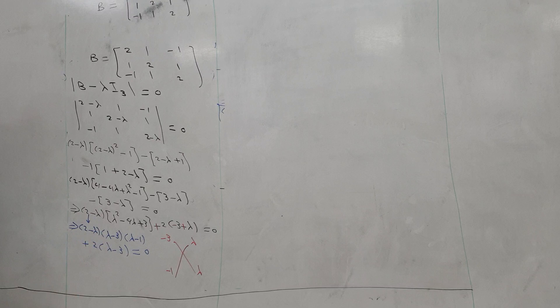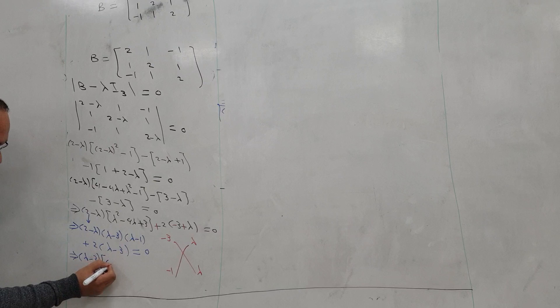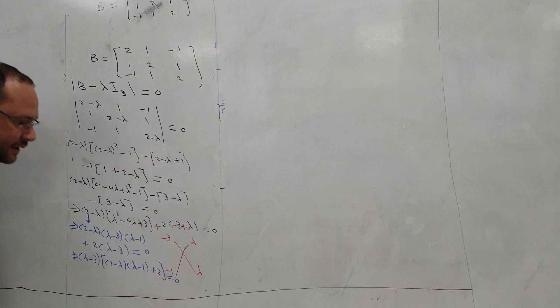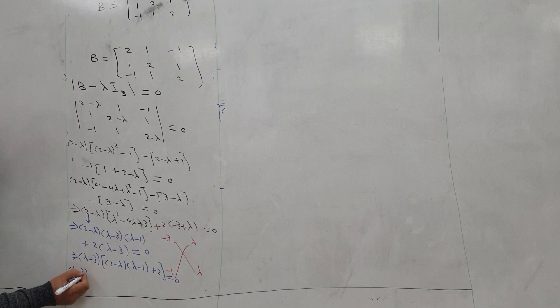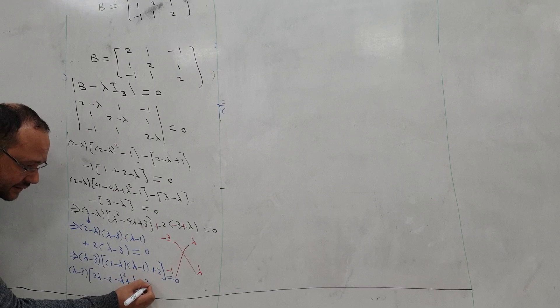We can take (lambda minus 3) as a common factor. So we have: (lambda minus 3) times [(2 minus lambda)(lambda minus 1) plus 2] equals 0. Expanding the two brackets: (lambda minus 3) times [2 lambda minus 2 minus lambda squared plus lambda plus 2] equals 0.